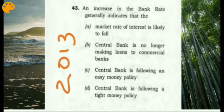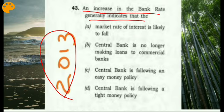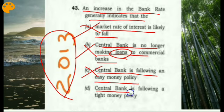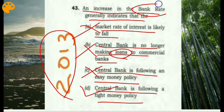A prelims 2013 question asked: 'An increase in the bank rate generally indicates...' The correct answer is that the central bank is following a tight money policy. When the bank rate or repo rate increases, there is less money with the public, leading to a tight money policy. If the bank rate and repo rate decrease, it leads to an easy money policy. Other options — market interest rates are likely to fall, the central bank is making no loans, or it is following an easy money policy — are all wrong statements.